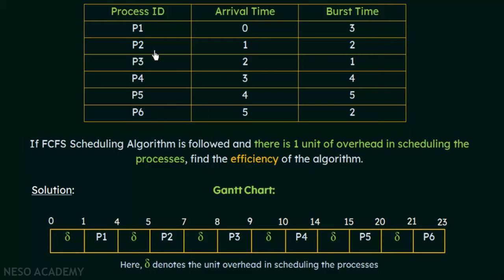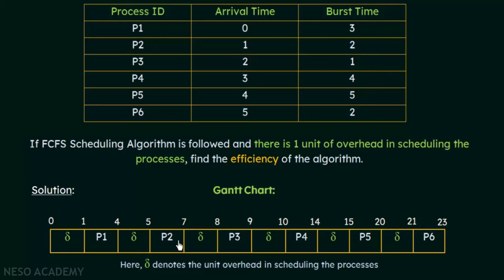P2 arrives at time 1, so P2 is the next one to get the CPU. But again, since there is 1 unit of overhead in scheduling, after P1 releases the CPU, there will be 1 unit delay before P2 gets it. So from 4 to 5, there is the delay. At the 5th unit of time, P2 gets the CPU and executes for 2 units of time. 5 plus 2 is 7, so P2's completion time is 7.